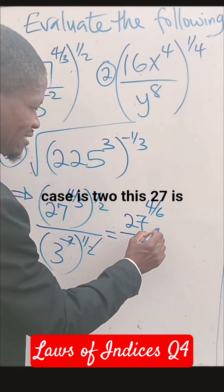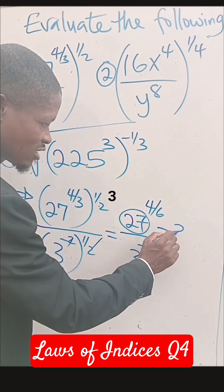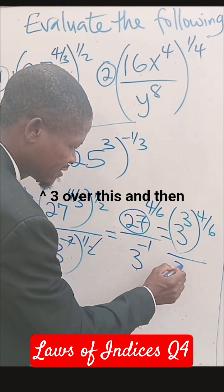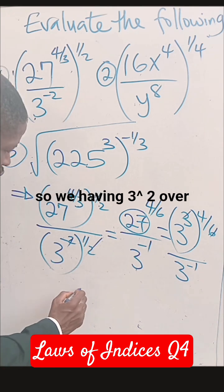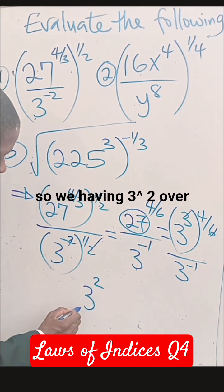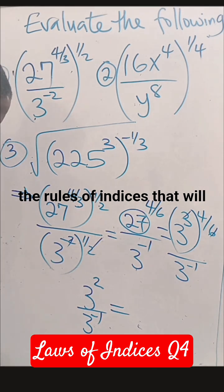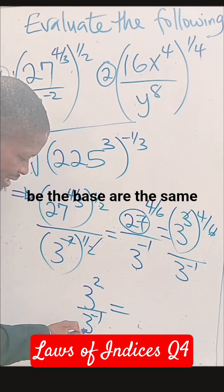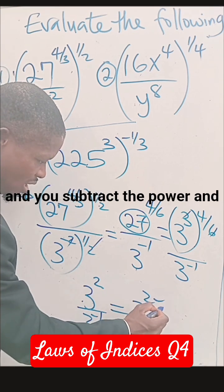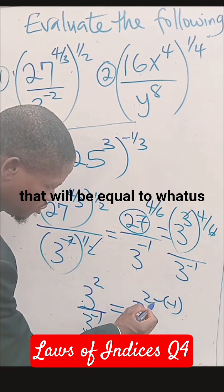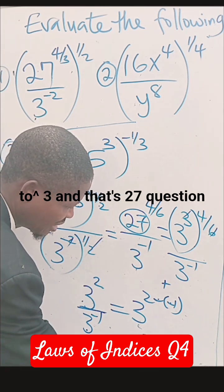So what we're going to do in this case is 27 is 3 to power 3 over 3, and then that's 2. So we're having 3 to power 2 over 3 to power minus 1. And then apply the rules of indices - that will be the base is the same, you take one of the bases, then you subtract the power. And that will be equal to minus minus become plus, and that's 3 to power 3, and that's 27.